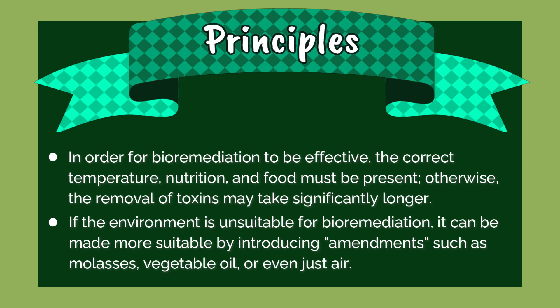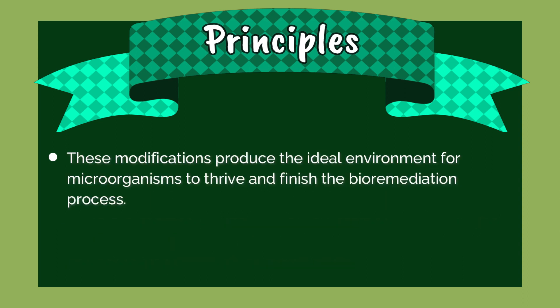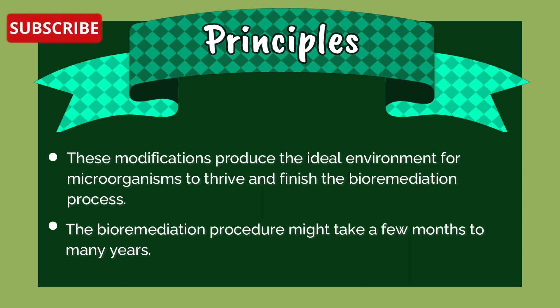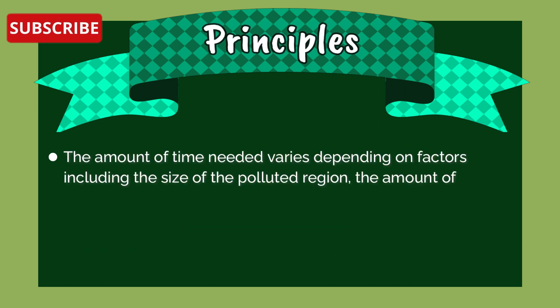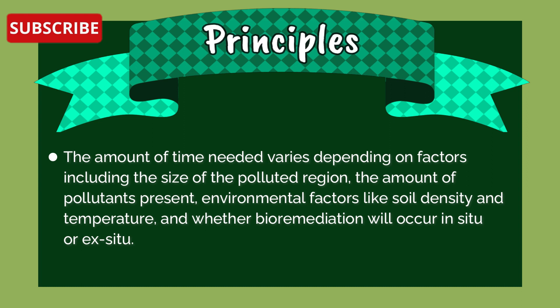If the environment is unsuitable for bioremediation, it can be made more suitable by introducing amendments such as molasses, vegetable oil, or even just air. These modifications produce the ideal environment for microorganisms to thrive and finish the bioremediation process. The procedure might take a few months to many years, depending on factors including the size of the polluted region, the amount of pollutants present, environmental factors like soil density and temperature, and whether bioremediation will occur in situ or ex situ.